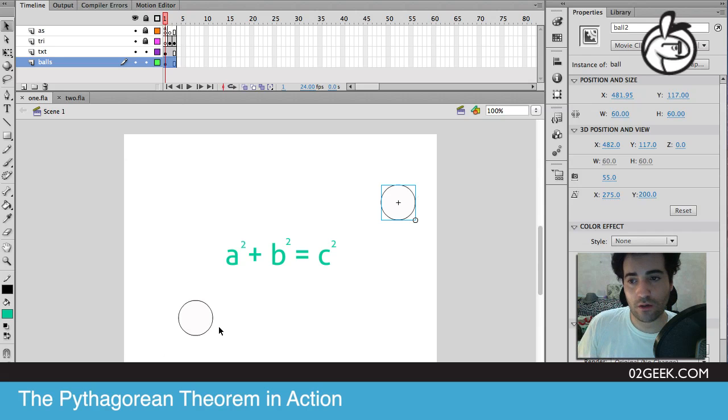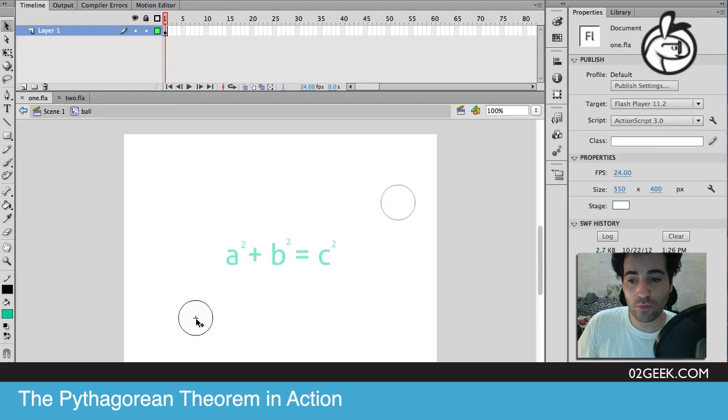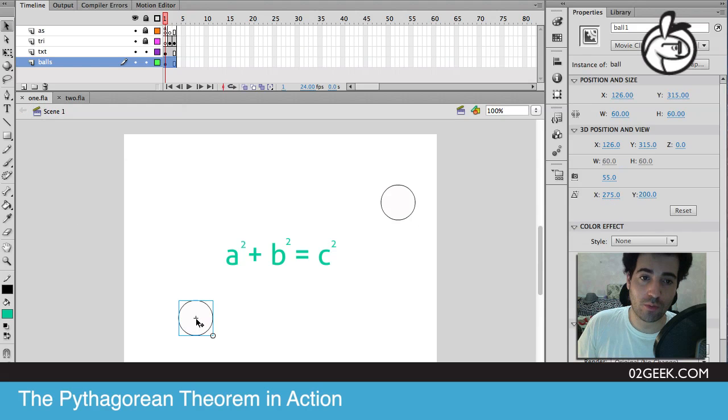So we have two circles, and those circles are ball one and ball two. They are a movie clip, and their movie clip point is in the center of their screen, aka the registry point of 126, the X of 126 and Y of 315 is the center point of our circle. And we have also a second circle called ball two. Now, we want to figure out and calculate the distance, or actually the line, if we were to draw a line from dot one to dot two, to know exactly what the distance is.